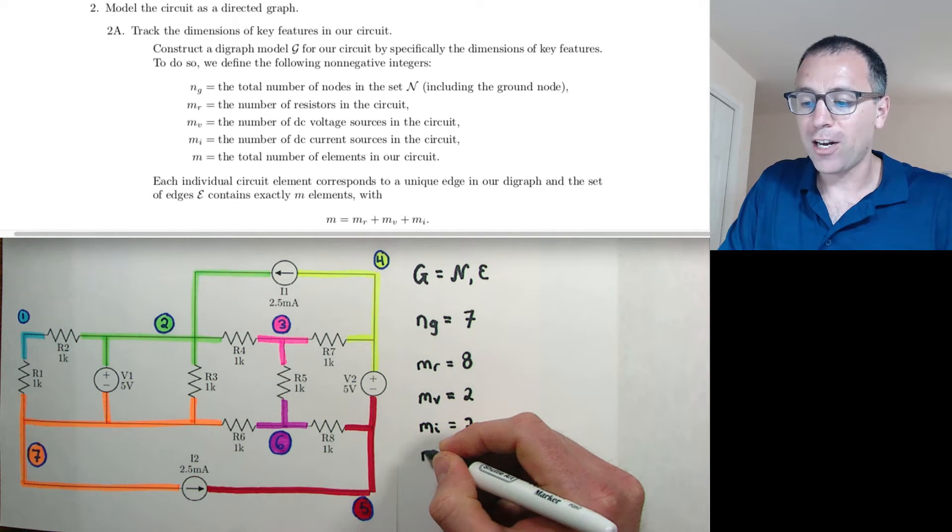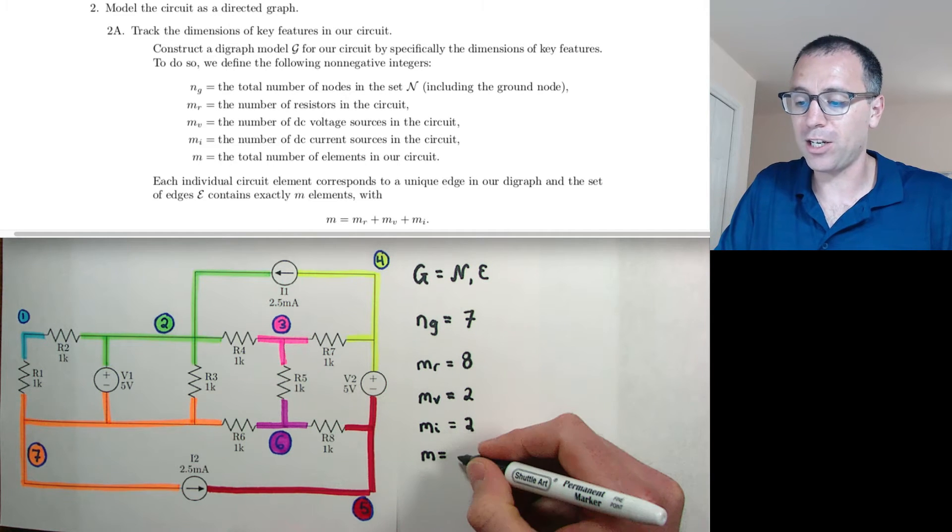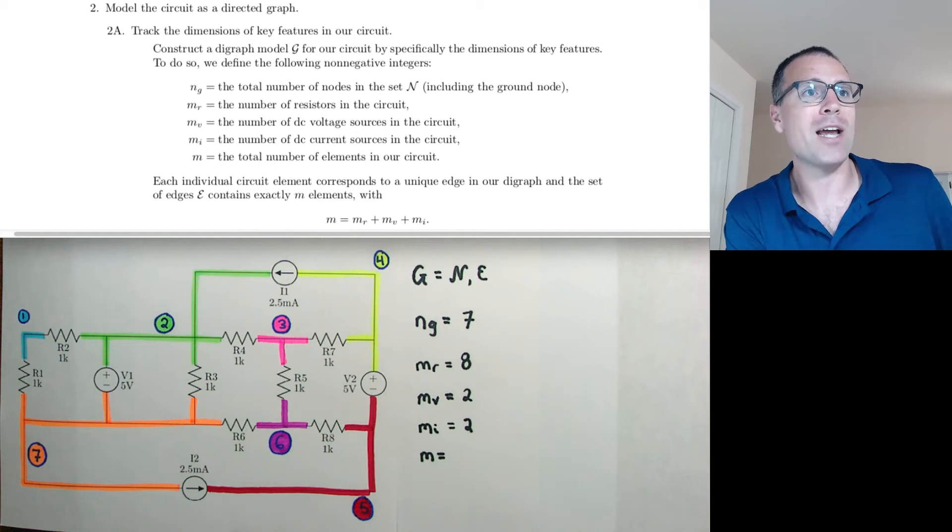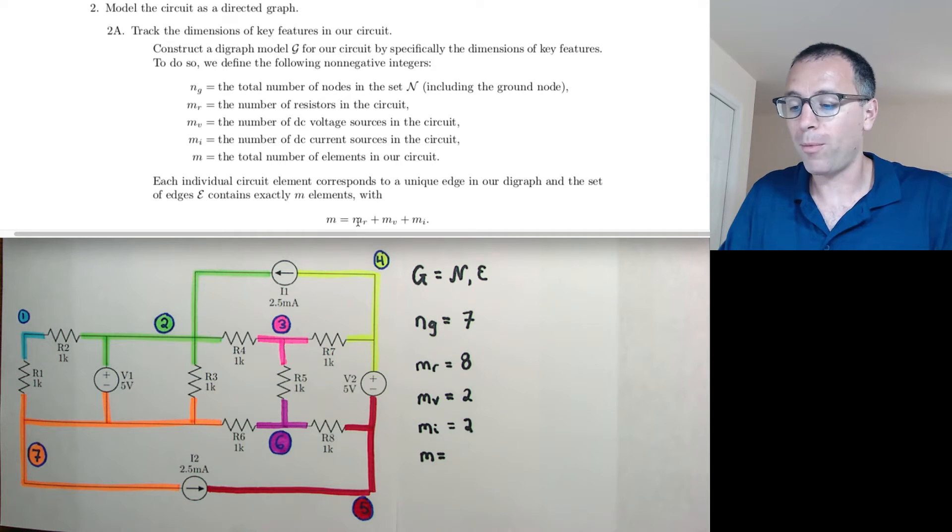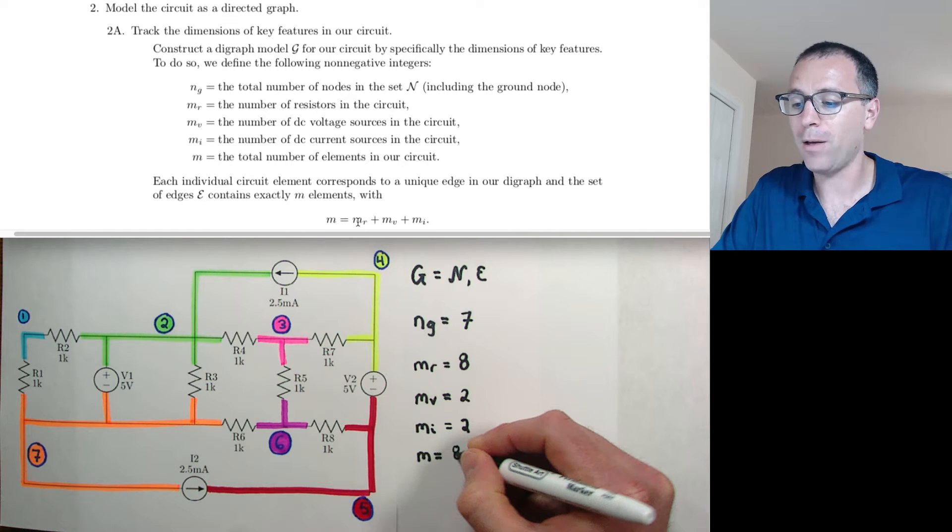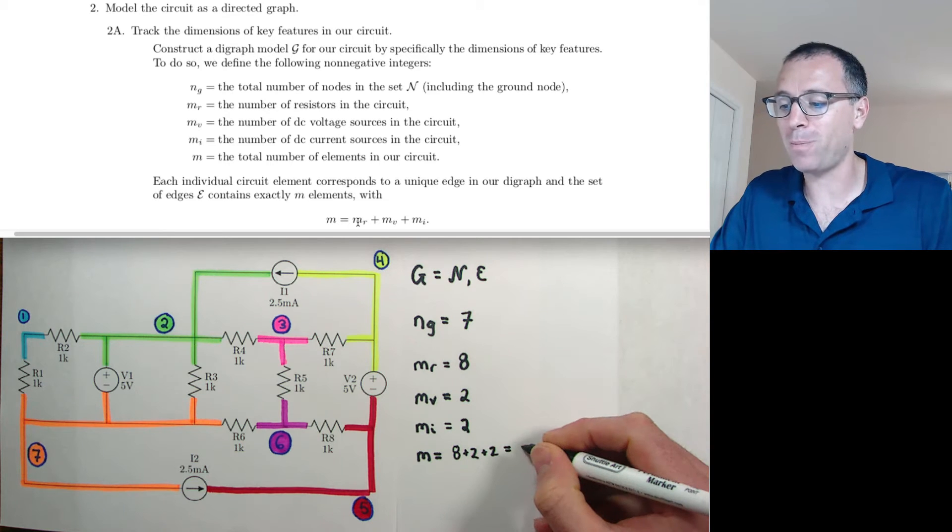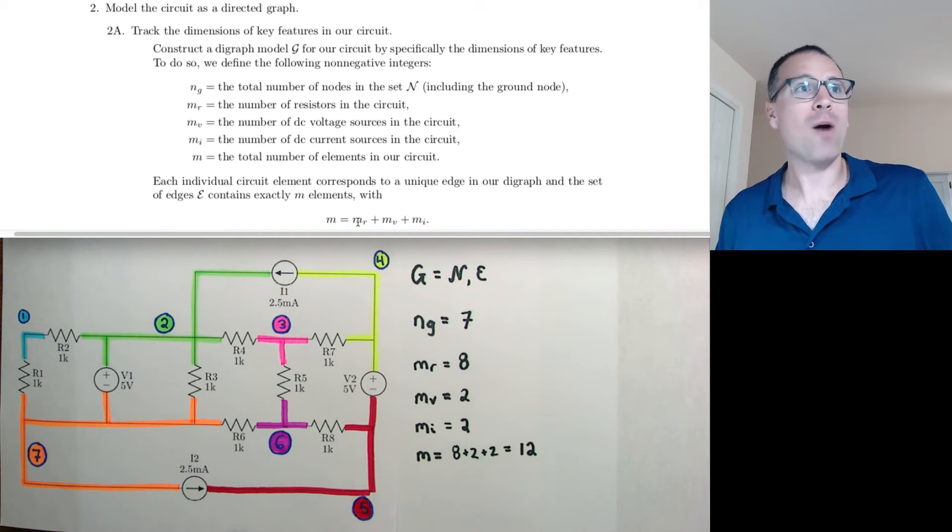The number of edges in our graph, in other words, the number of total circuit elements is going to be the sum, as we see right here on screen. M is going to be the total number of elements, which is the sum of each individual element. So this is eight plus two plus two. I didn't bring my calculator, but I'm thinking that that must be something like twelve. With that, we've tracked all the individual dimensions that we're going to need for later, and we finished the first subset of step two.